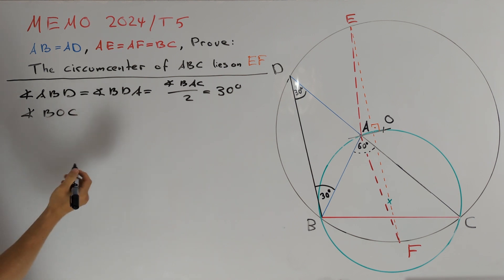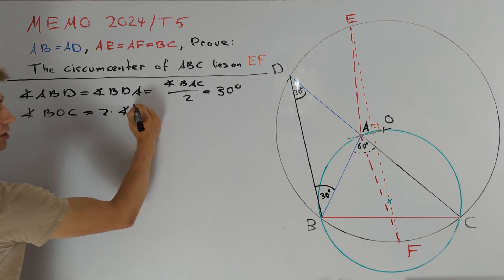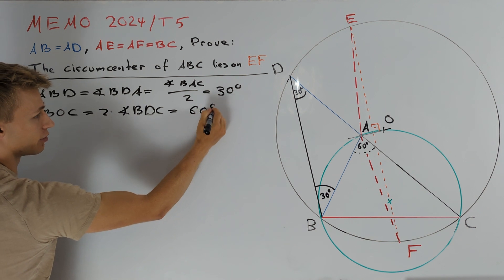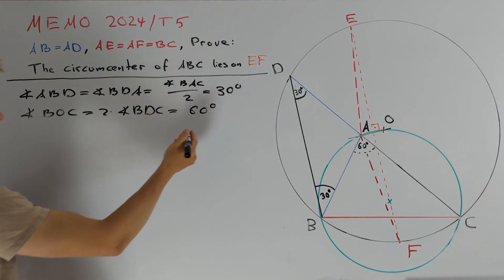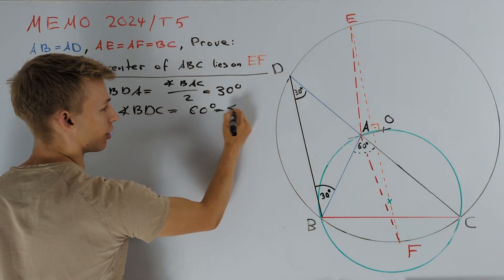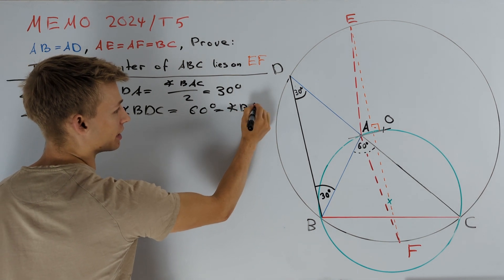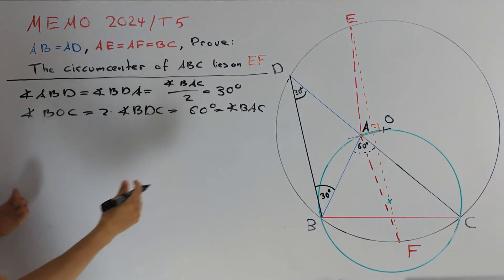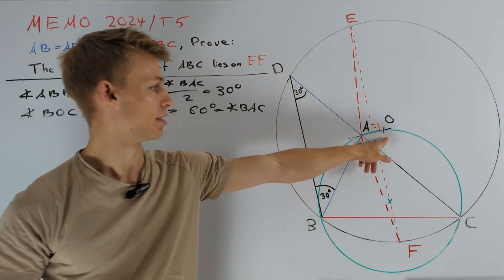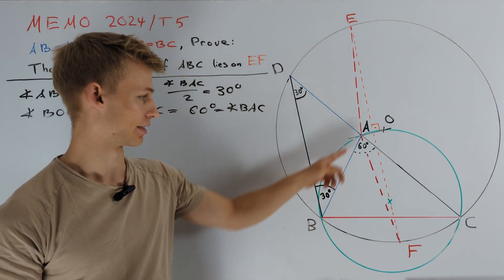Namely, this tells us that this angle is equal to 2 times the angle BDC which is equal to 2 times 30 degrees or 60 degrees. We notice that this is also equal to our original angle BAC. And this implies that point O must lie on the circumcircle of triangle ABC.